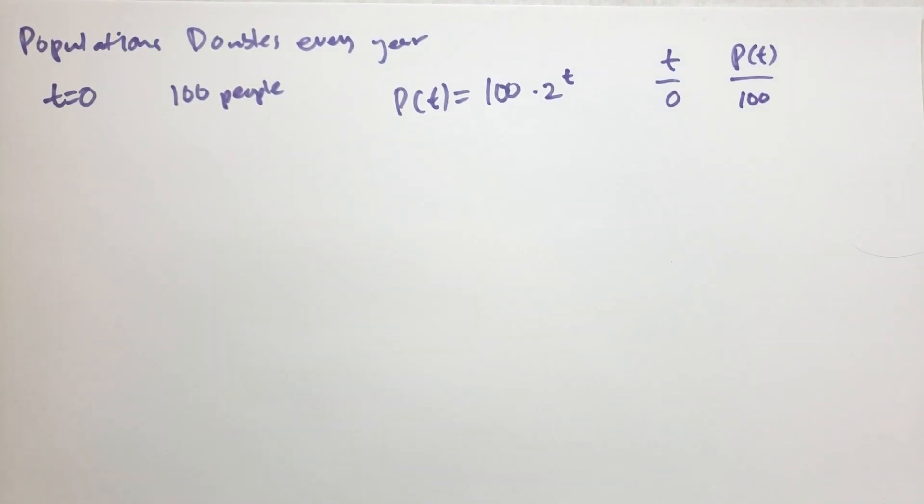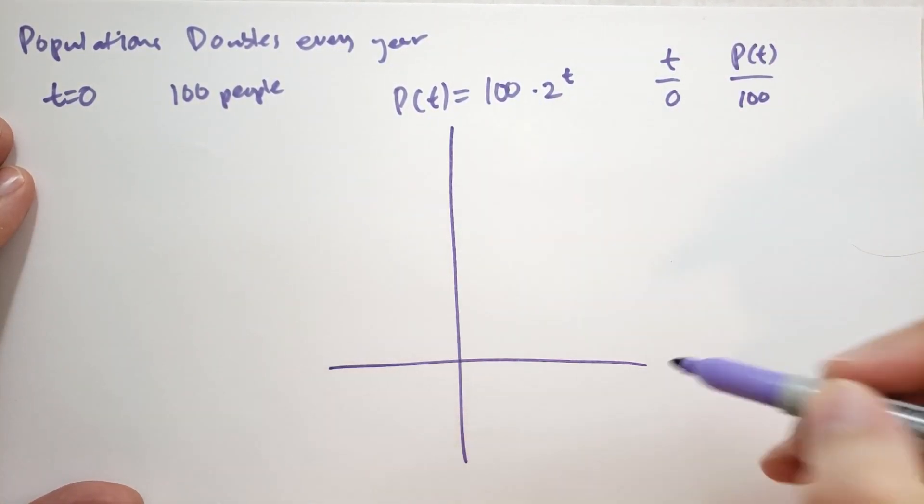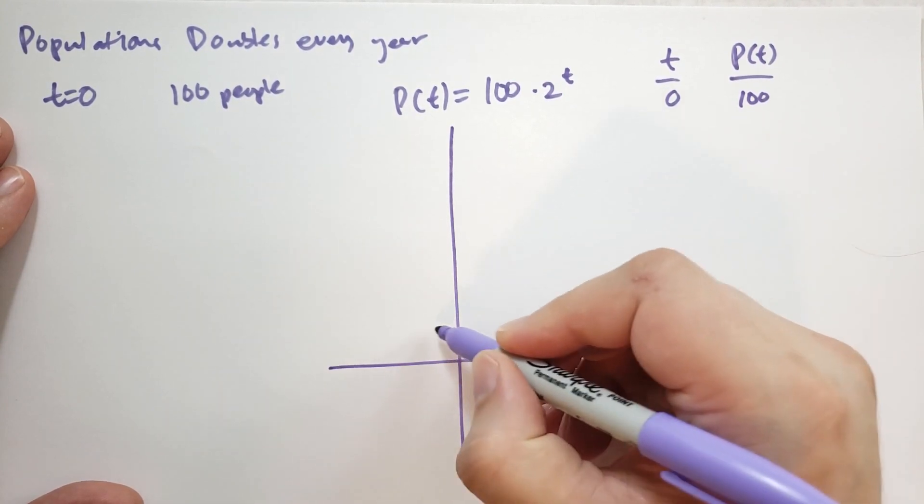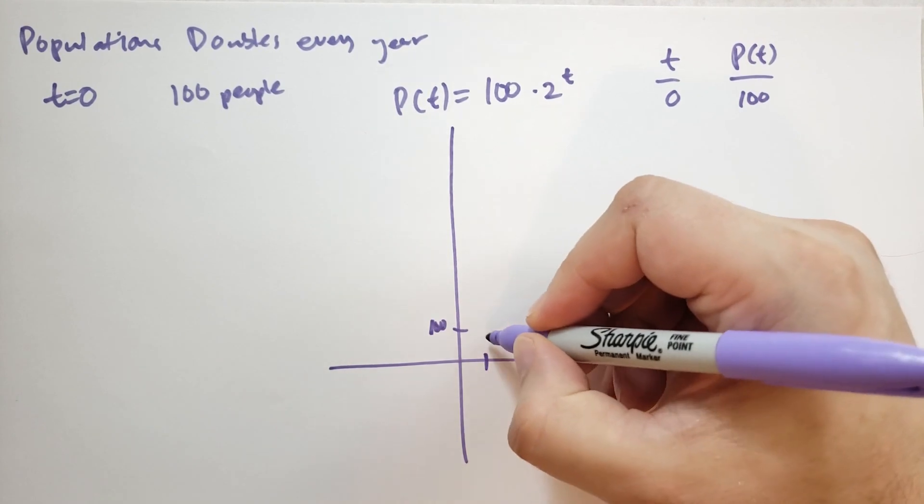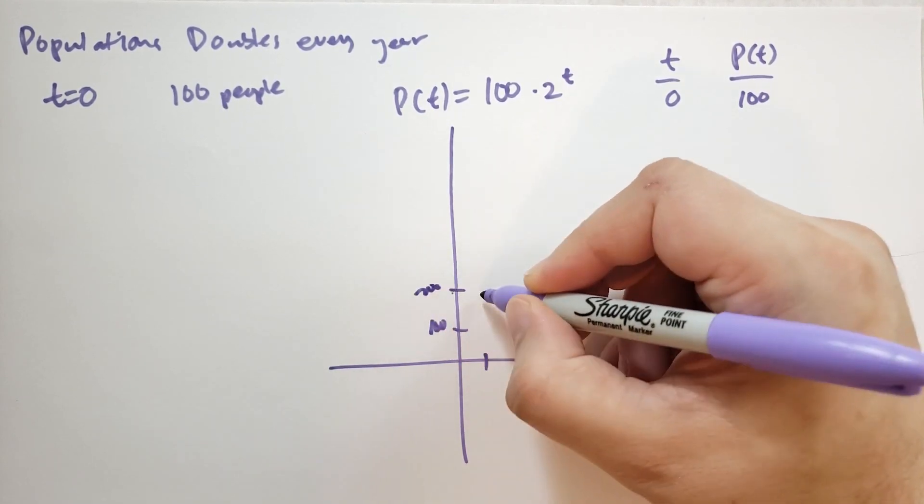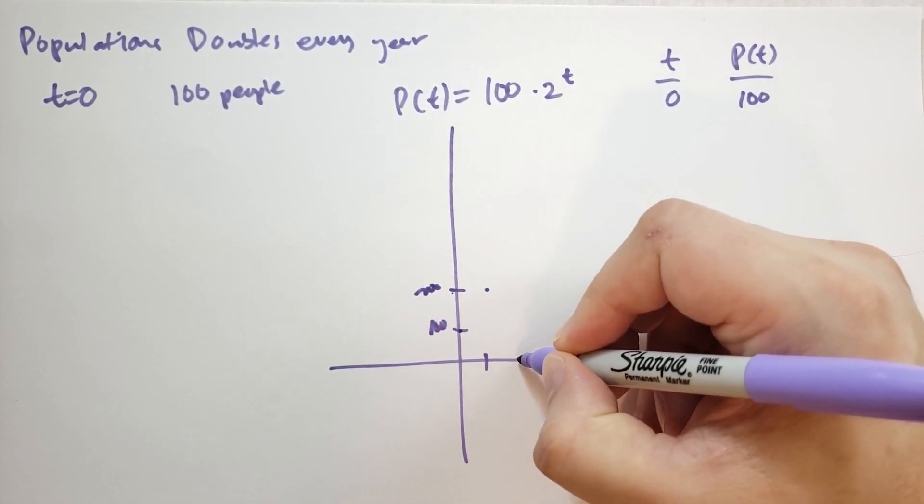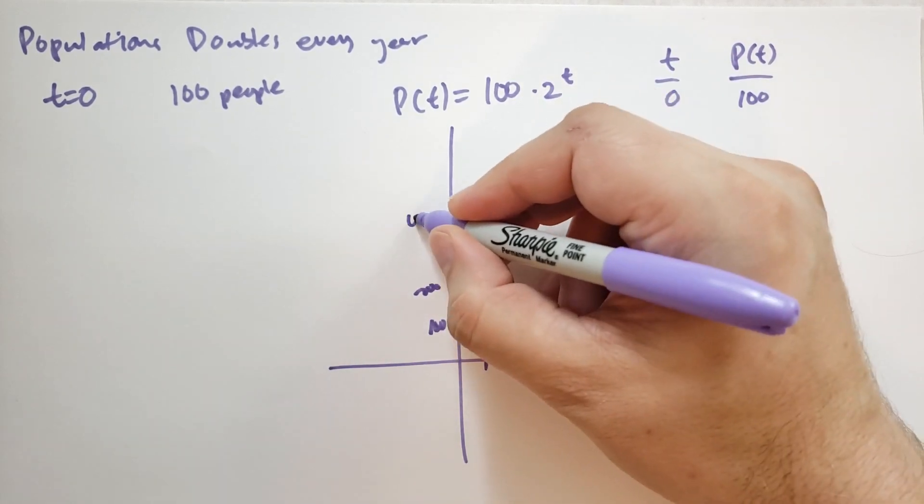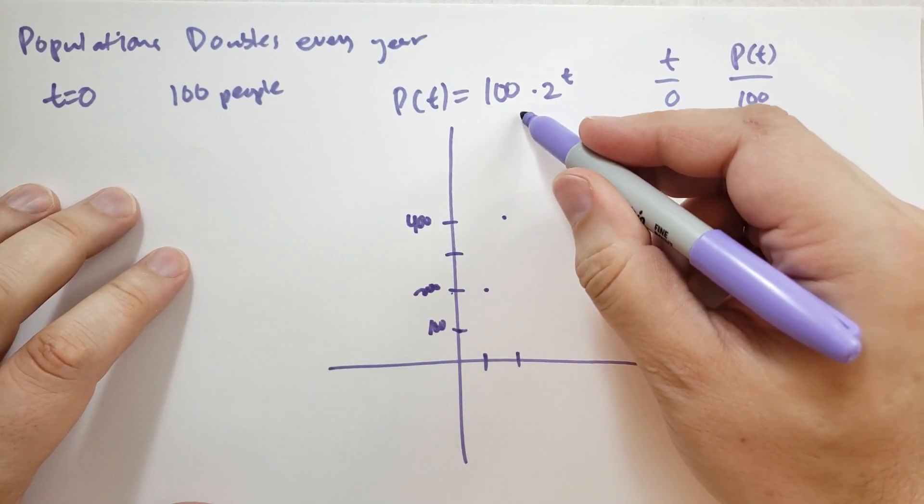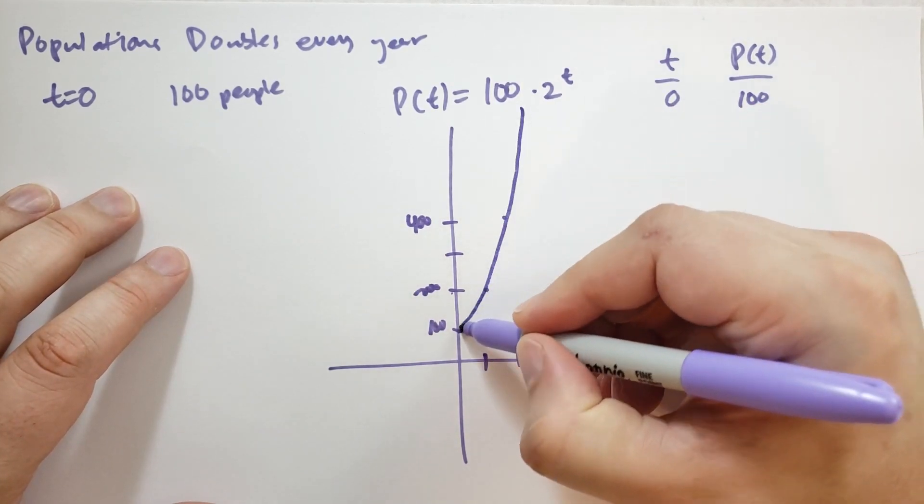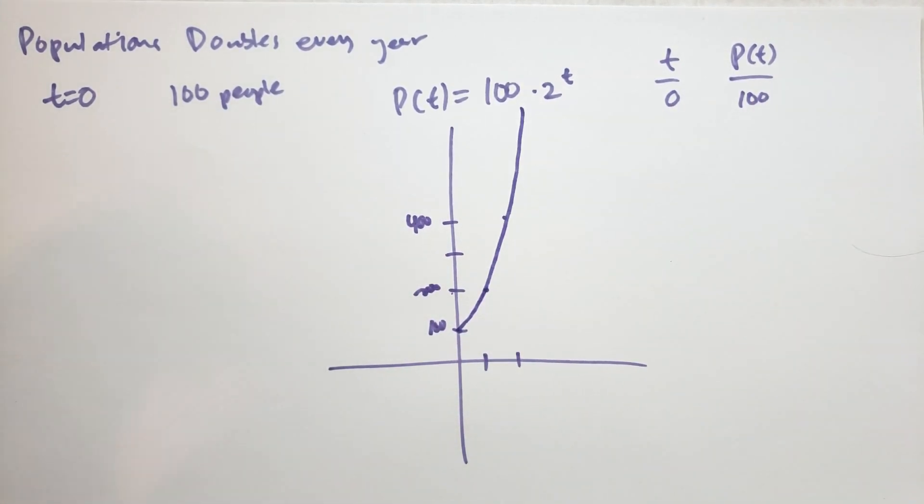Let's draw a graph of what happens to the population over time. So we have 100 here. Then at t equals 1, it's going to double, becoming 200. At t equals 2, it's going to be 400. And so on. And it's going to rapidly increase exponentially. So that's how that population is going to grow.